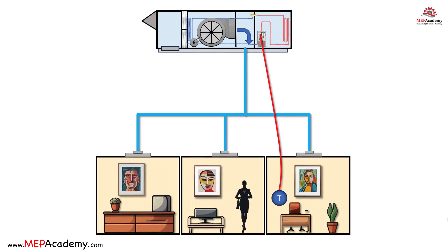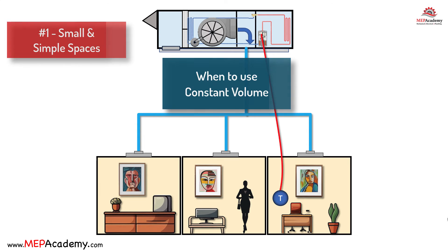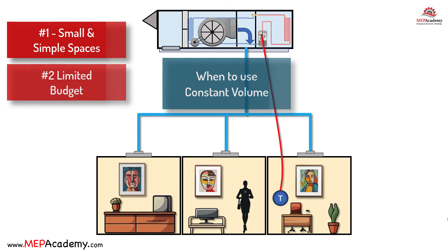When to Use a Constant Volume System. Constant volume systems have their place in certain scenarios. 1. Smaller and Simpler Spaces: in smaller buildings or spaces with consistent occupancy and minimal temperature variations, constant volume systems can be cost-effective and straightforward to install. 2. Limited Budget: if you have budget constraints and the building's requirements align with the capabilities of a constant volume system, it may be a more economical choice up front.